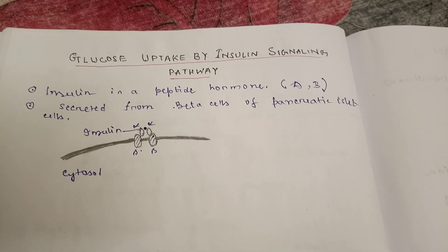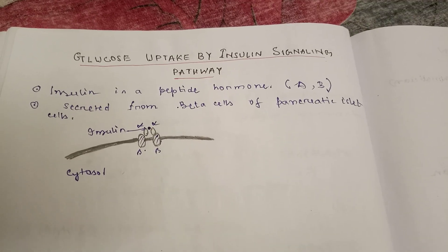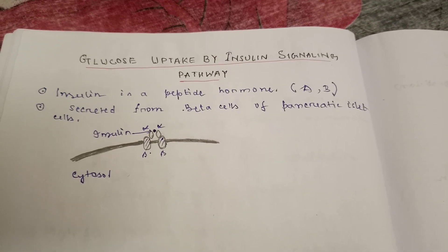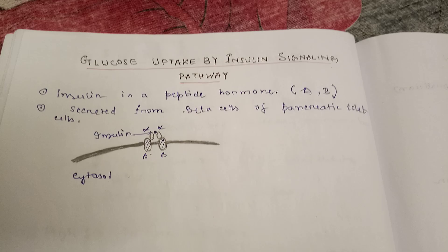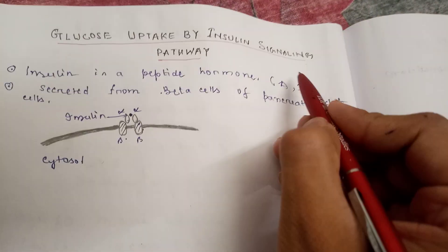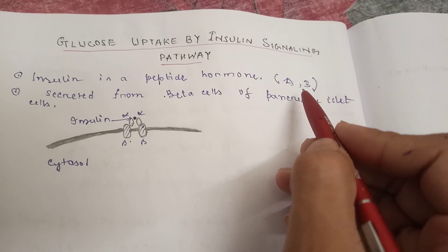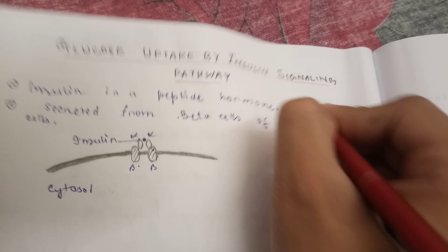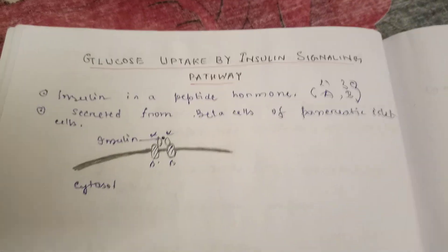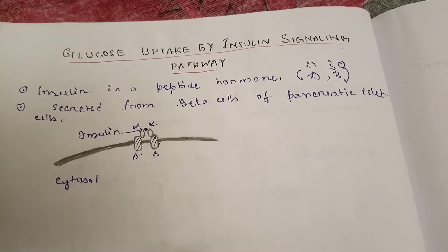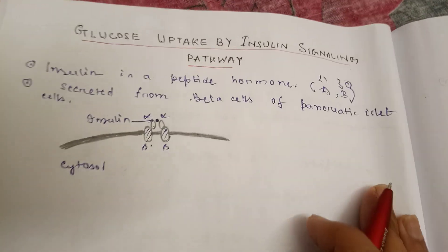Hello friends, welcome to Biosumi. Today we learn about glucose uptake by the insulin signaling pathway. First, some basic facts: insulin is a peptide hormone with two polypeptide chains, A and B. Chain A consists of 21 amino acid residues and chain B consists of 30. Insulin is secreted from the beta cells of pancreatic islet cells, and 70% of the pancreatic islet cells are beta cells.